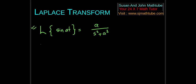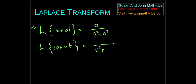So we get: Laplace of sin at is equal to a by s squared plus a squared. Now you can try this by yourself — it will be really good if you try it now. Find Laplace of cos at. The denominator will be the same because we use a similar formula, and the numerator will be s. So that gives us the next two formulae.